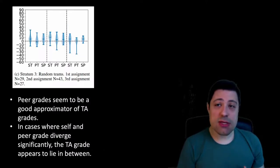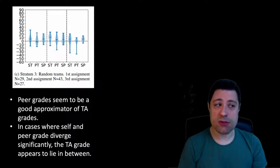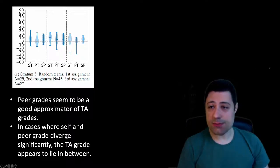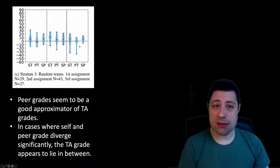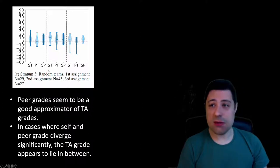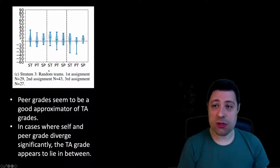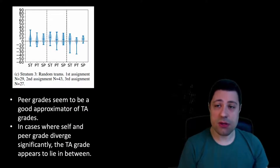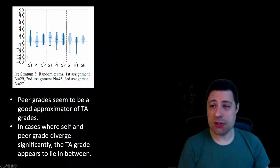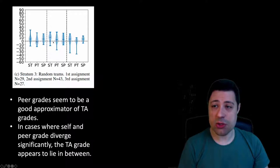If we compare to the grades that TAs would give, we notice that the peer grades seem to be a good approximator of the TA grades. I show the third stratum — the teams that were randomly selected for checks, meaning the difference was smaller than 25% between self and peer grades, and grades were not higher than 90%. The box plot for the difference between peer grades and TA grades is near zero, showing that peers gave a very similar grade to the TAs.